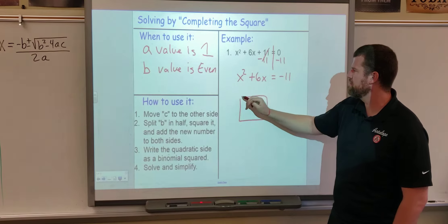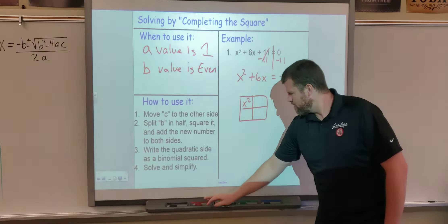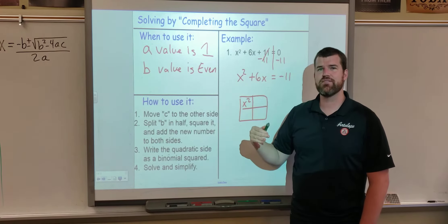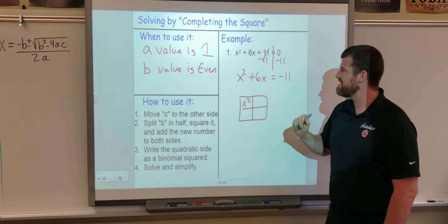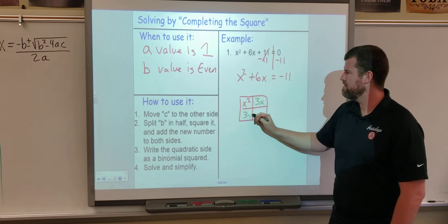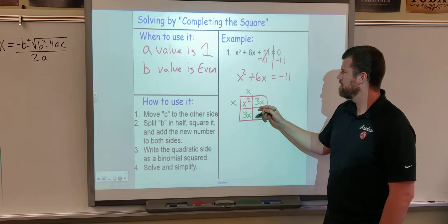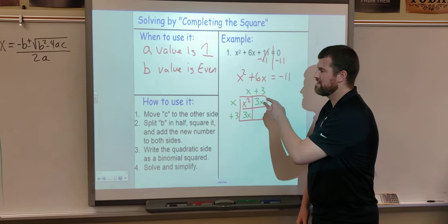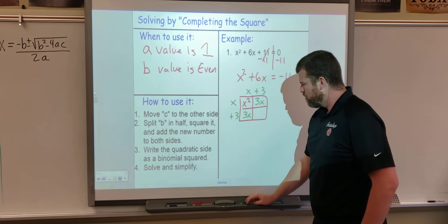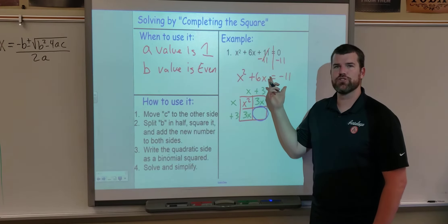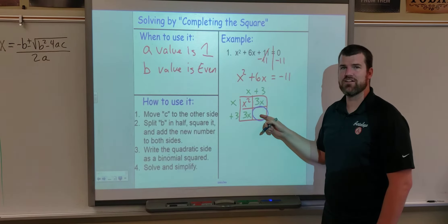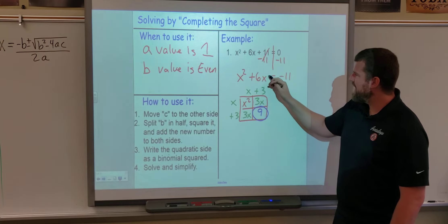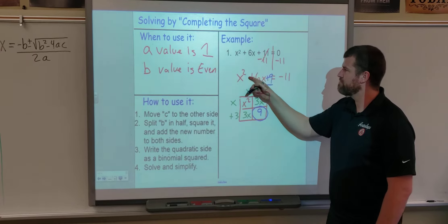Then we're going to put it in the box. We know our first term goes in the first box, and these two terms have to add to the middle — in this case 6x. But in order to make this a square, we have to have the same values in these two spots, so we split the 6x in half, giving us 3x and 3x. When we factor we get x here and x here, plus 3 and plus 3. We have a blank remaining; since the sides are both 3, that corner must be 9 — because 3 times 3 is 9.